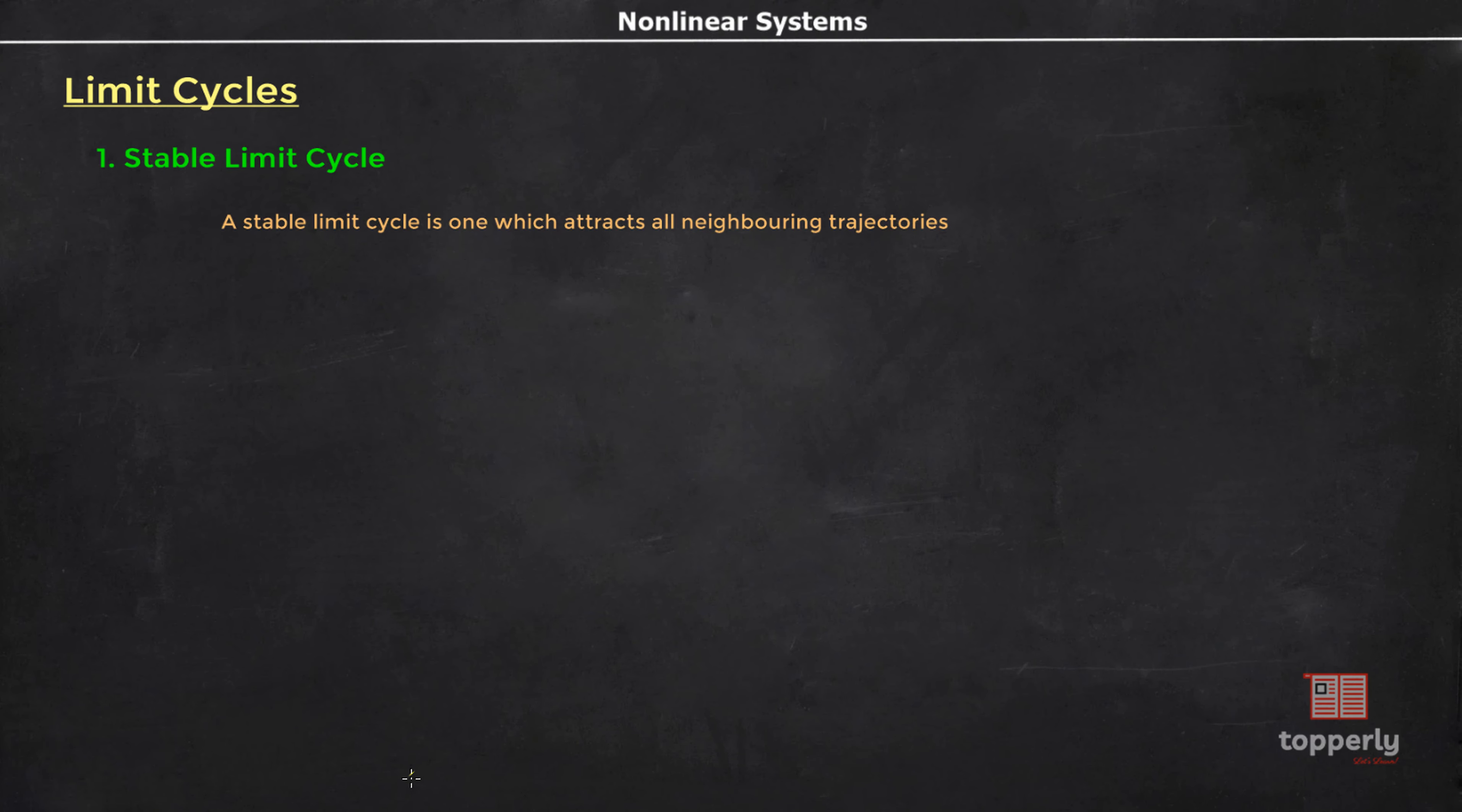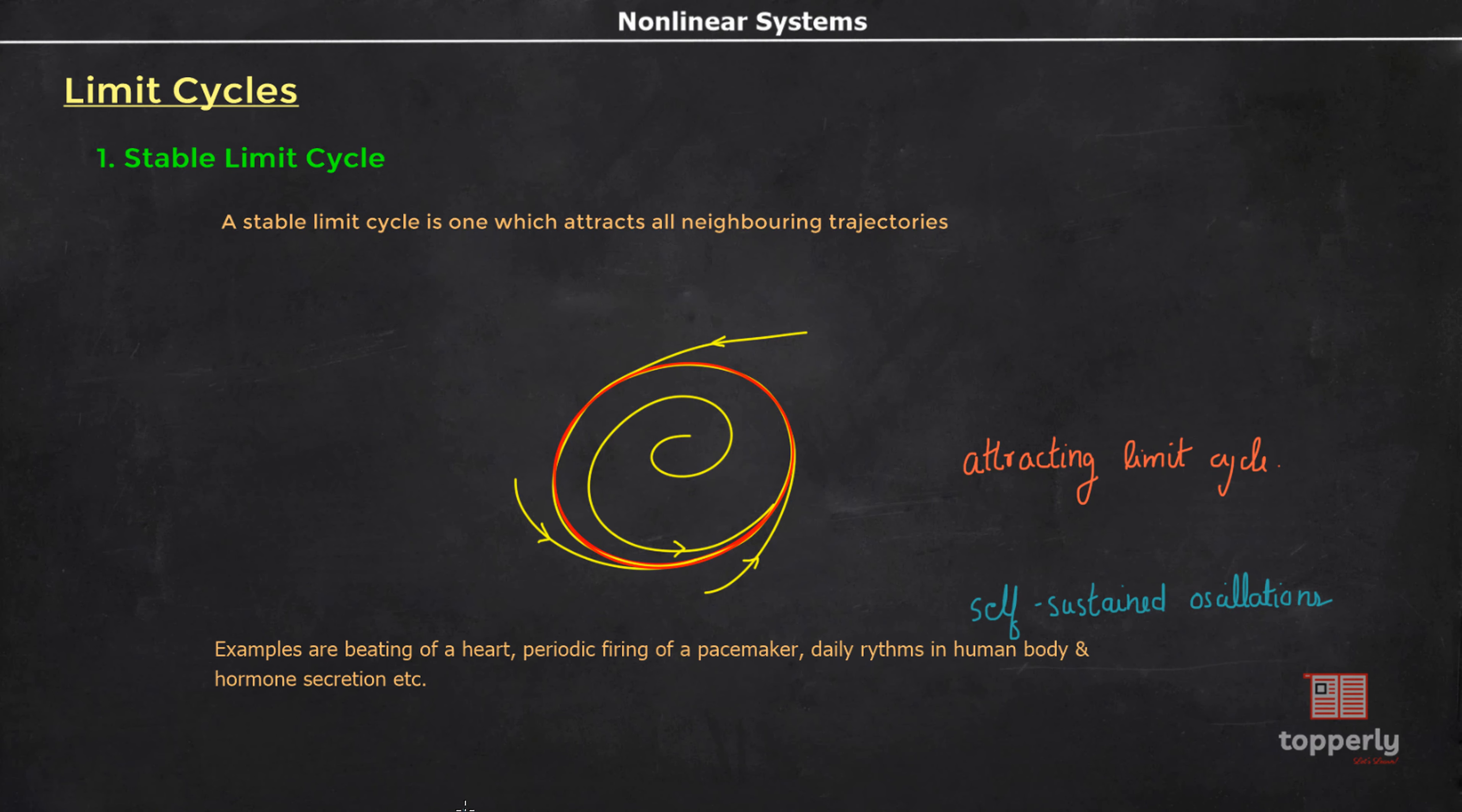The first one is a stable limit cycle. A stable limit cycle is one which attracts all neighboring trajectories. If you look at the figure, all the neighboring trajectories are attracted to this limit cycle marked in red. If all the neighboring trajectories approach the limit cycle as time approaches infinity, then the limit cycle is called a stable one or attracting one. Stable limit cycles are very important scientifically because a system with stable limit cycle can exhibit self-sustained oscillations. Meaning that these systems oscillate in the absence of external periodic forcing. Most biological processes are of this kind, like beating of a heart, periodic firing of a pacemaker neuron, daily rhythms in human body and hormone secretion.